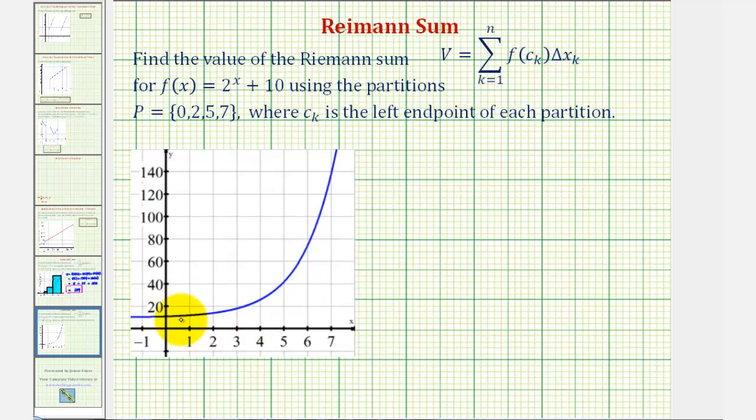If the function was negative or dropped below the x-axis, we could use the same process, but it wouldn't represent the area because if the function is below the x-axis, the function value of f(c) would be negative.